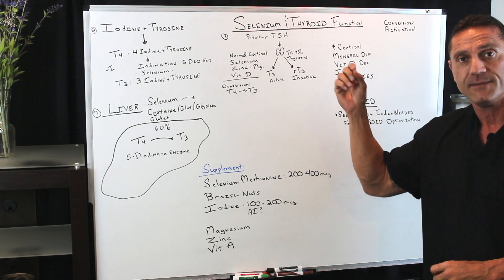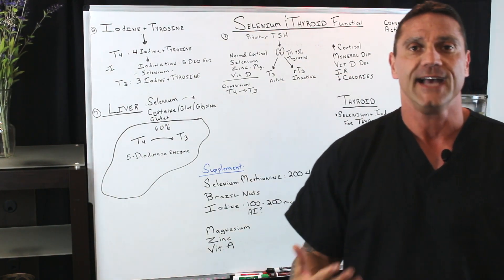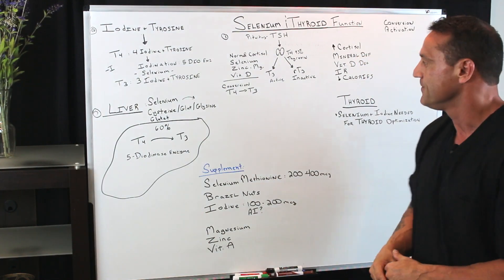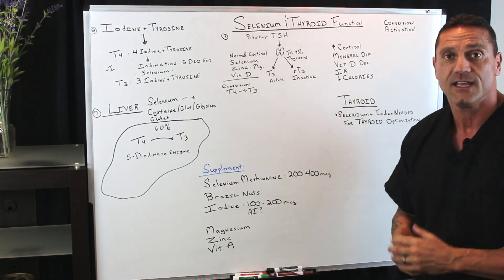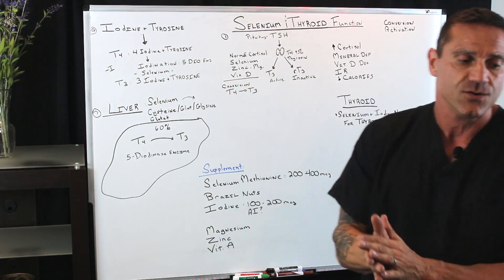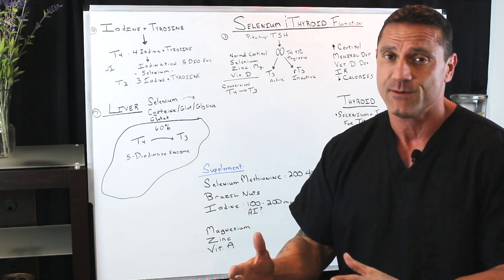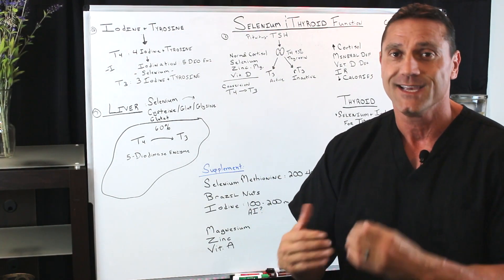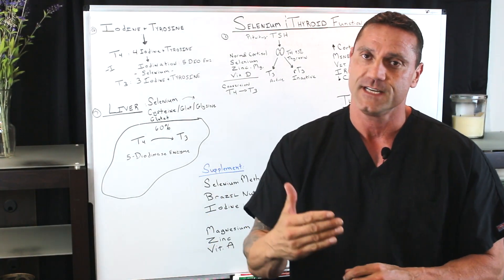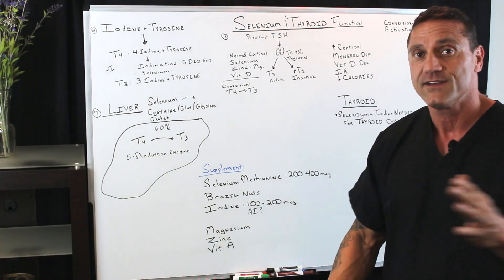Vitamin D3 deficiency, insulin resistance — these are going to affect how the thyroid gland conversion affects the body. Also, if you're taking in low calories — whether you're an athlete or trying to lose weight the wrong way and not taking in adequate calories — this is going to affect the conversion of T4 to T3, because we need these important minerals for the conversion.